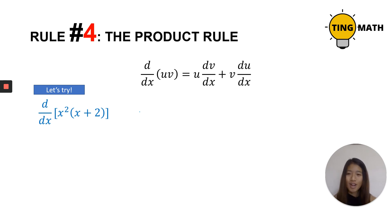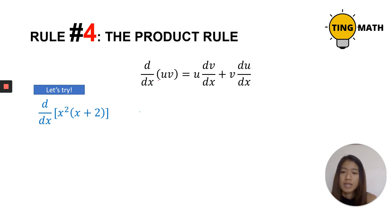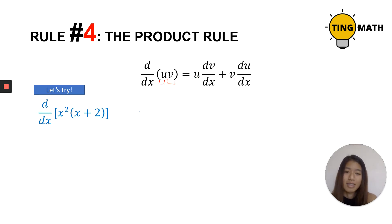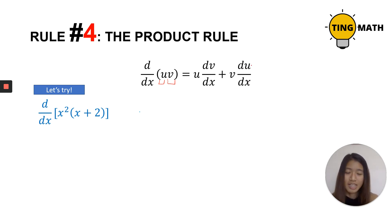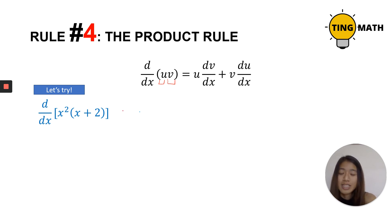Let's go on to the product rule. The product rule states that if you want to differentiate two products — for example x squared times (x minus 2) — you differentiate one and multiply by the undifferentiated other, plus the original first term multiplied by the derivative of the second.